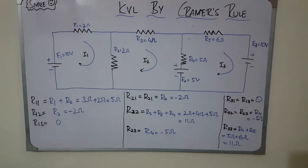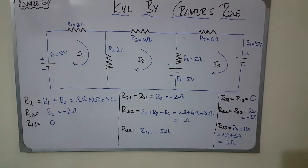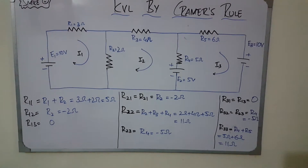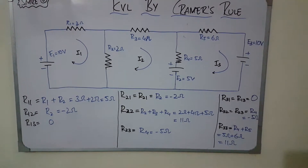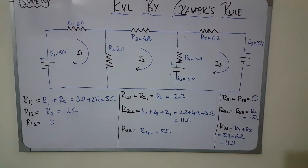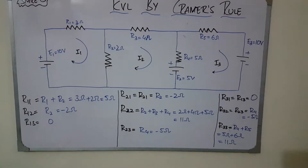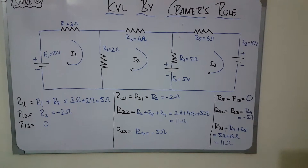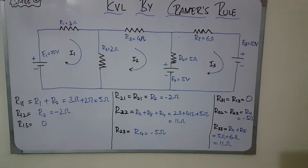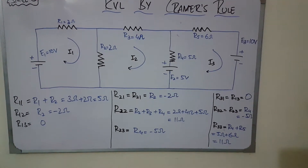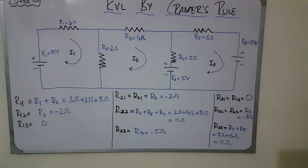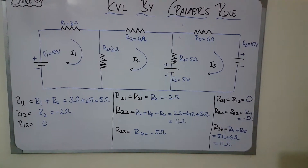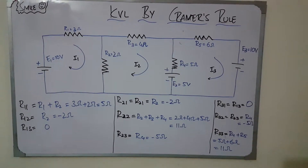In the given circuit there are almost five resistors and three voltage sources. Below, there are values R11, R12, R13 which will be used further. R11 basically means the resistance in the first loop — there are two resistors in the first loop, R1 and R2, and putting those values the sum becomes five ohms.